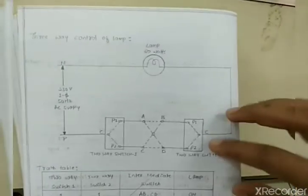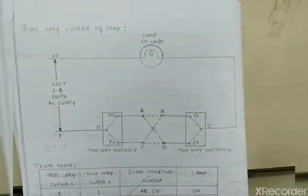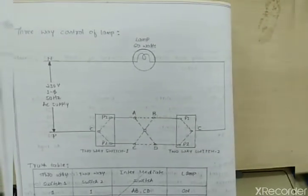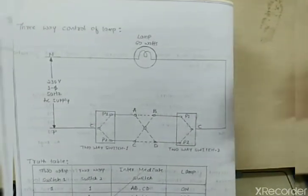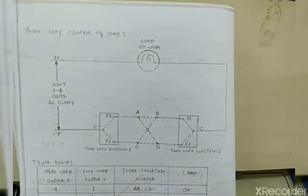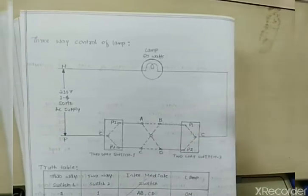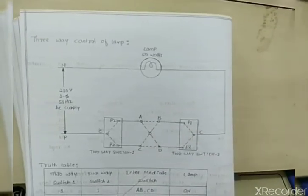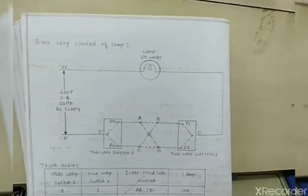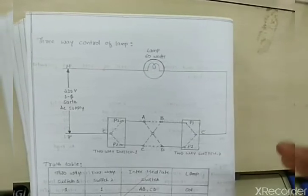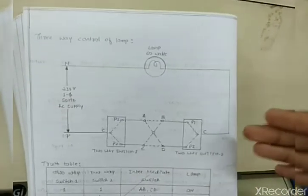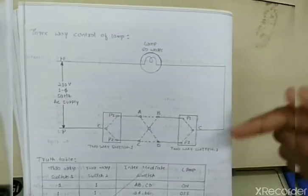Now we will continue with the three-way control of lamp. The aim is to verify the truth table of a three-way control lamp. This type of connection is used in staircases when you have two or more floors in a building, and also in large-area spaces like godowns.